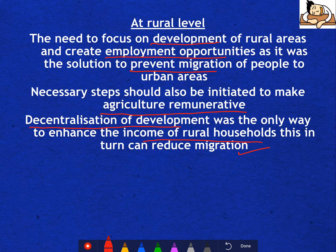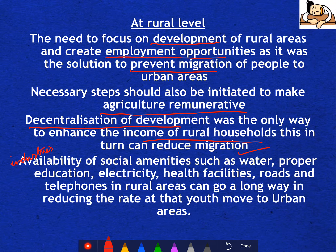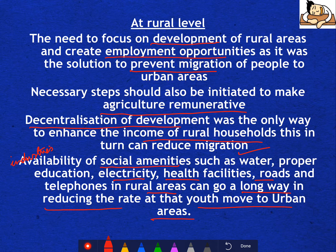You can even develop industries in rural areas, which will actually create certain forward and backward linkages and reduce migration. The availability of social amenities such as water, education, electricity, health facilities, roads, and telephones in rural areas can also go a long way in reducing the rate at which youth move to urban areas. Even if migration cannot be completely stopped, at least its rate will decrease.